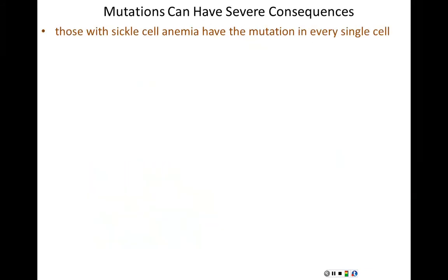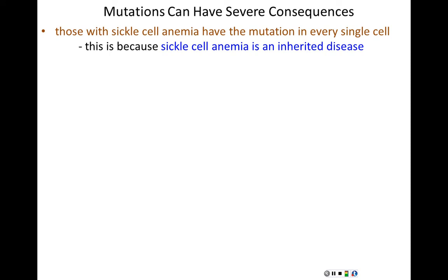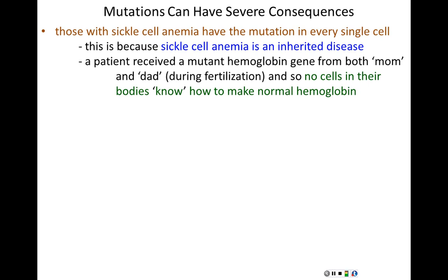People with sickle cell anemia contain this mutation in every single one of their cells, because their genome is present in every cell. Individuals with sickle cell anemia inherited this disease — they received a mutant hemoglobin gene from both their mother and father. These individuals are homozygotic recessive, containing two mutant alleles.